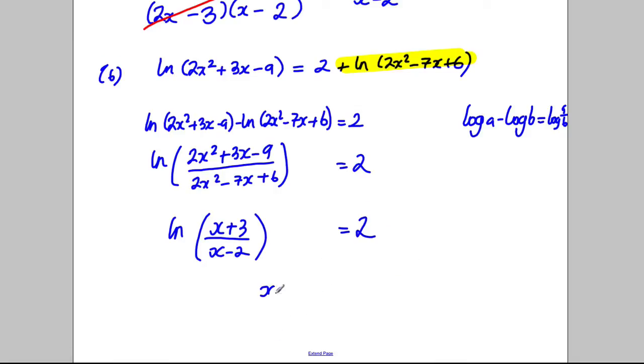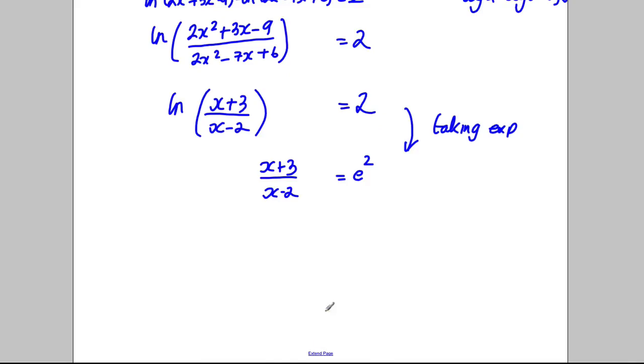Now I can take the exponential of both sides so that (x + 3) over (x - 2) is going to be e². That's just taking exponentials, taking exponents of both sides. And so I want to find x. X is currently on a numerator and denominator. Multiply both sides by x subtract 2, so x + 3 is going to equal e²x - 2e².